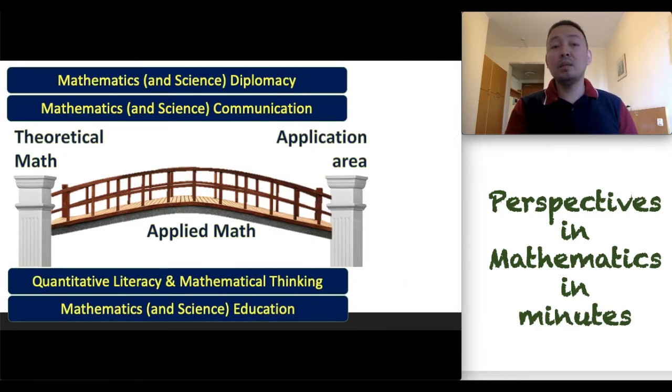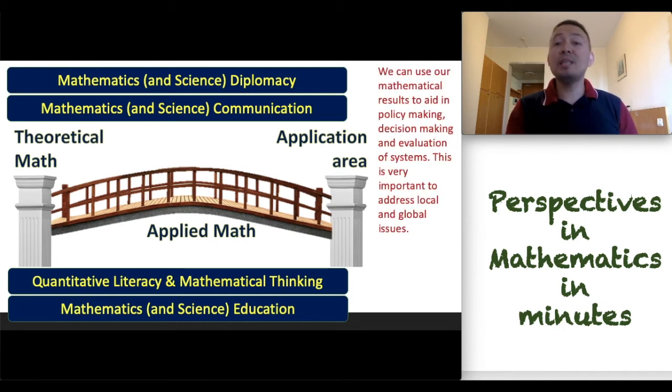Then lastly, mathematics and science diplomacy. We can use our mathematical results to aid in policy making, decision making, and evaluation of systems. This is very important to address local and global issues.